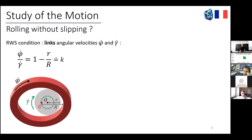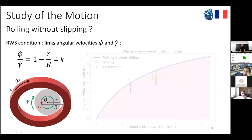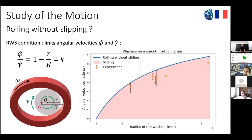Now the rolling-without-sliding condition. It is important because it links two angular velocities: the gamma-dot, the precession of the center of mass around the center of the rod, and the eigenvelocity along the main axis of symmetry, which is phi-dot. For a given rod, we plotted the ratio between velocities for different washers as a function of the radius. This area corresponds to rolling without slipping, and this area corresponds to slipping. From our experimental results, we can conclude that there is almost no slipping involved in the motion, and it's the same for threaded rods.